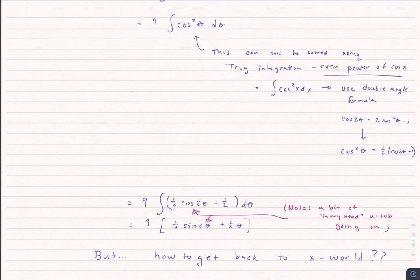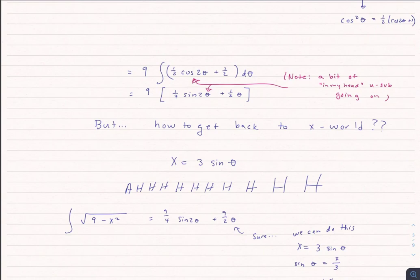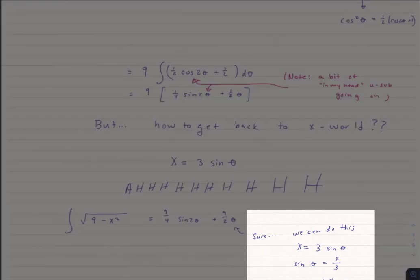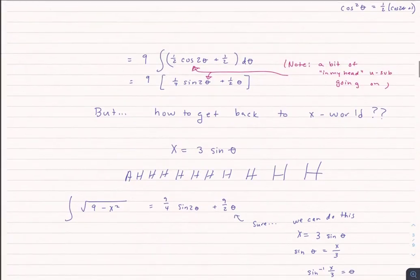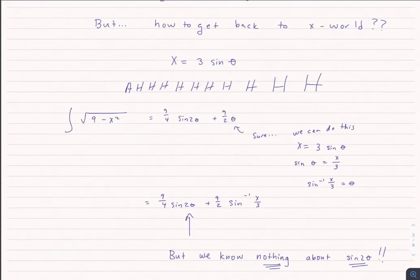I've done the integration, but now I've got all these thetas. I want to be in x-world, not theta-world. I do know that x equals 3 sine of theta, so I can solve for theta: sine theta equals x over 3, meaning theta equals arc sine of x over 3. But what about the 2 theta in sine of 2 theta? I can't pull that 2 out — it's a different angle altogether.